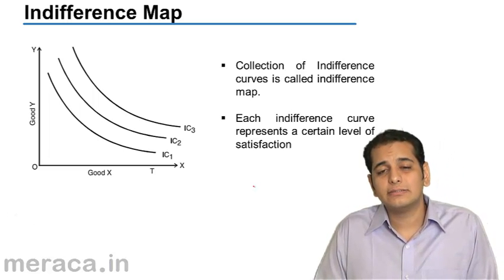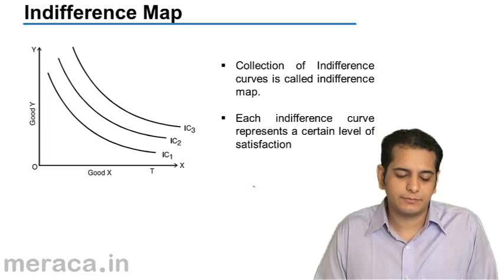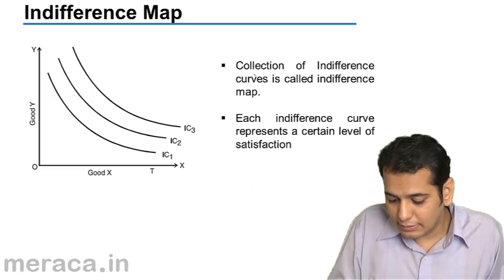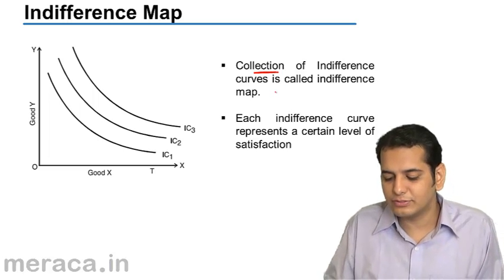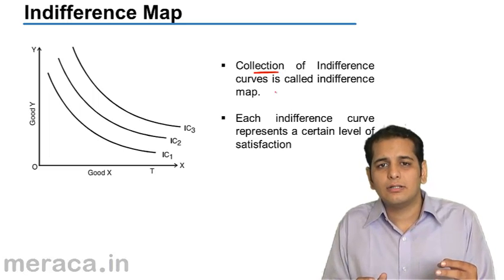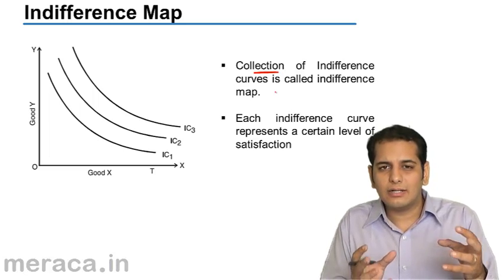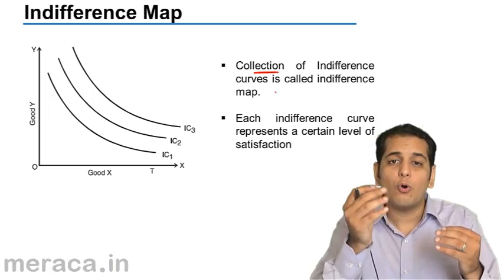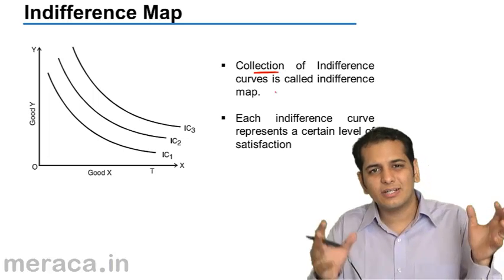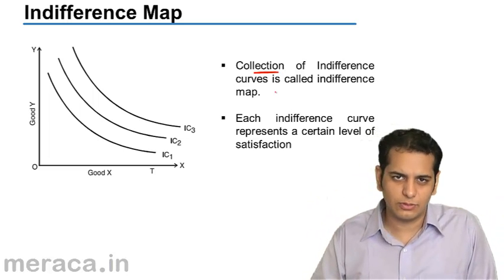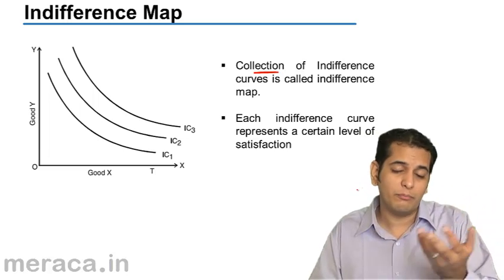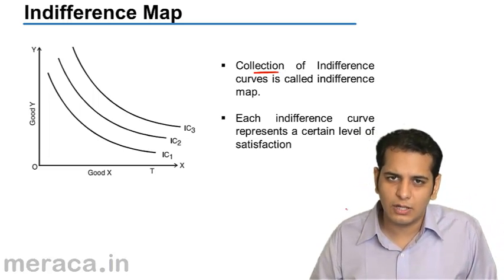Let's see what is an indifference map. An indifference map is a collection of indifference curves. It is nothing but a graph where two or more indifference curves are represented. On a single graph, 2, 3, 4, or maybe 5 indifference curves are shown.